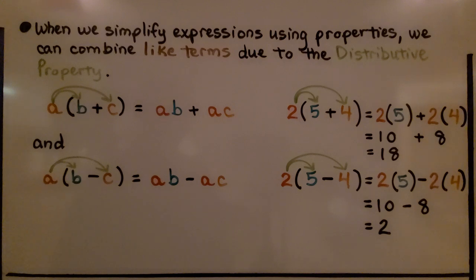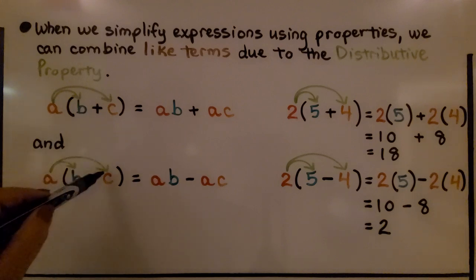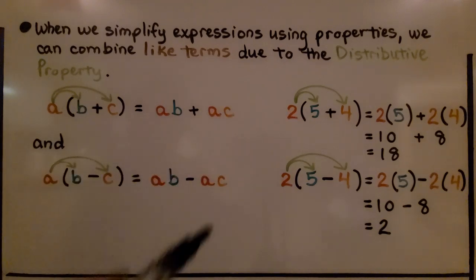When we simplify expressions using properties, we can combine like terms due to the distributive property. If we have a multiplied to b plus c, we can do a times b plus a times c. And if we have a multiplied to b minus c, we have a times b minus a times c.